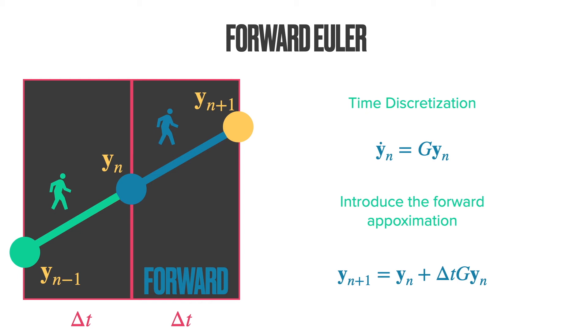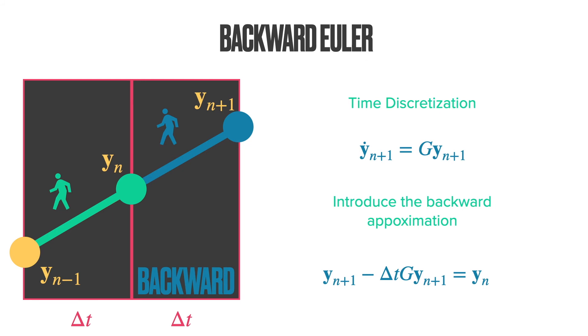If we introduce the backward differences, we get the backward Euler scheme. So basically, we write the first-order differential equation is valid at yn+1, instead of yn, which was done in the forward Euler scheme.